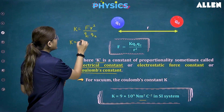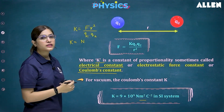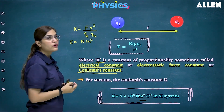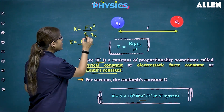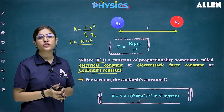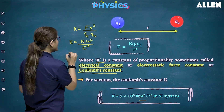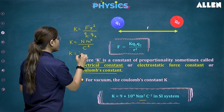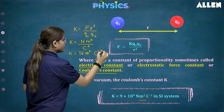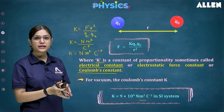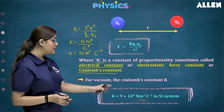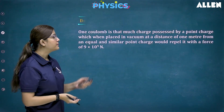The unit of distance is meter, so we have r squared giving meter squared, divided by Q1 and Q2 which are charges — the SI unit of charge is Coulomb — so Coulomb squared. Bringing Coulomb squared to the numerator gives Newton meter squared times Coulomb to the power minus 2. Please remember the value of Coulomb's constant is 9 times 10 to the power 9.